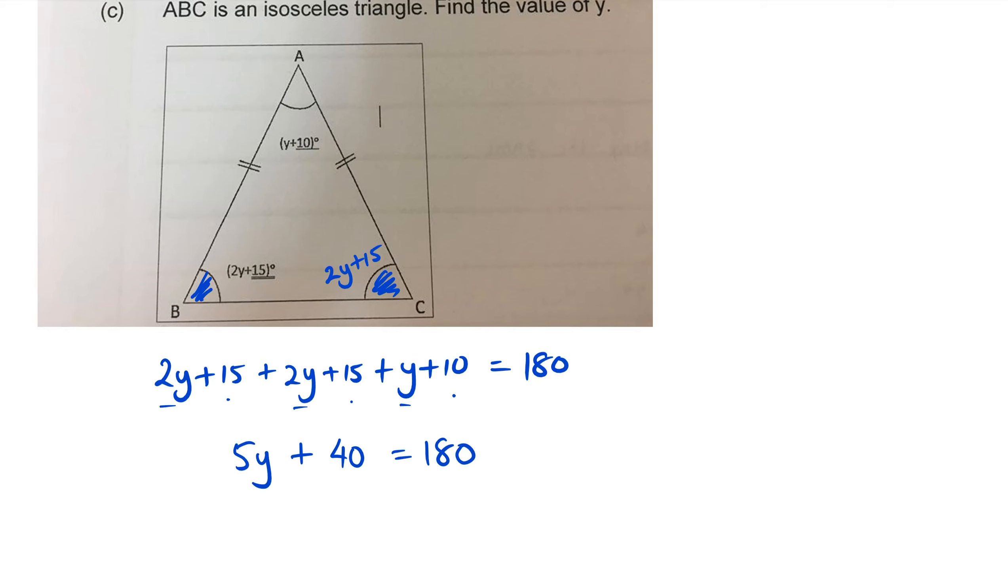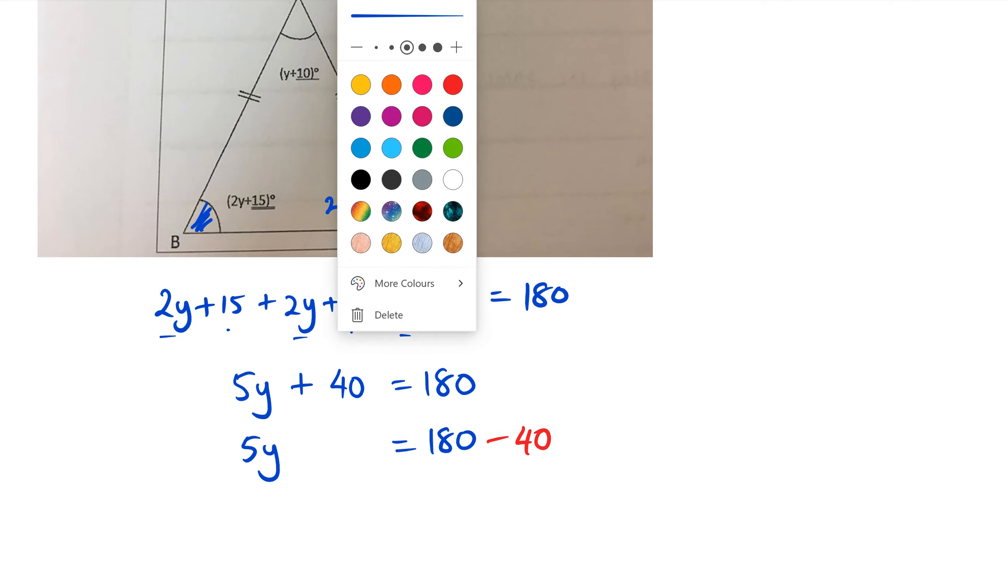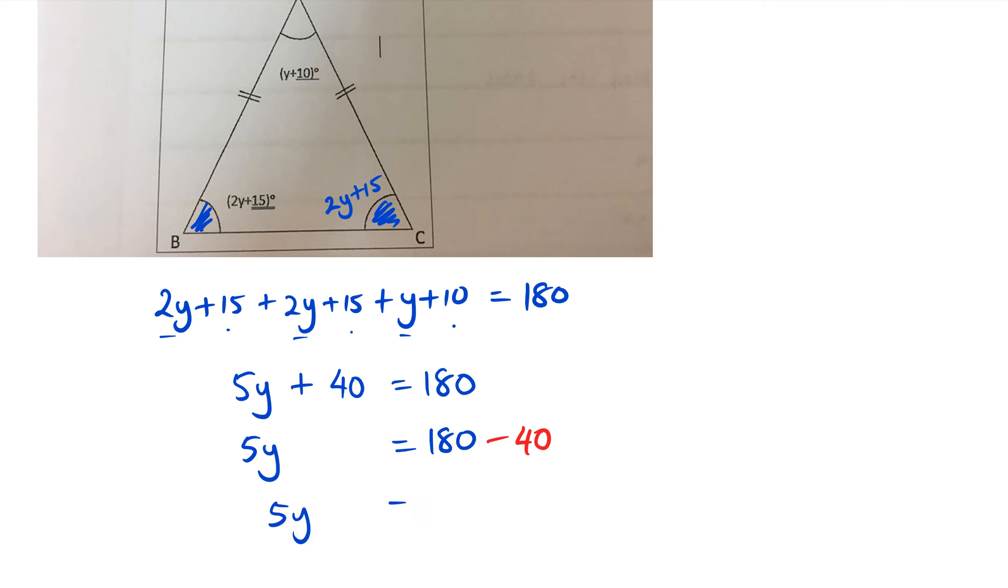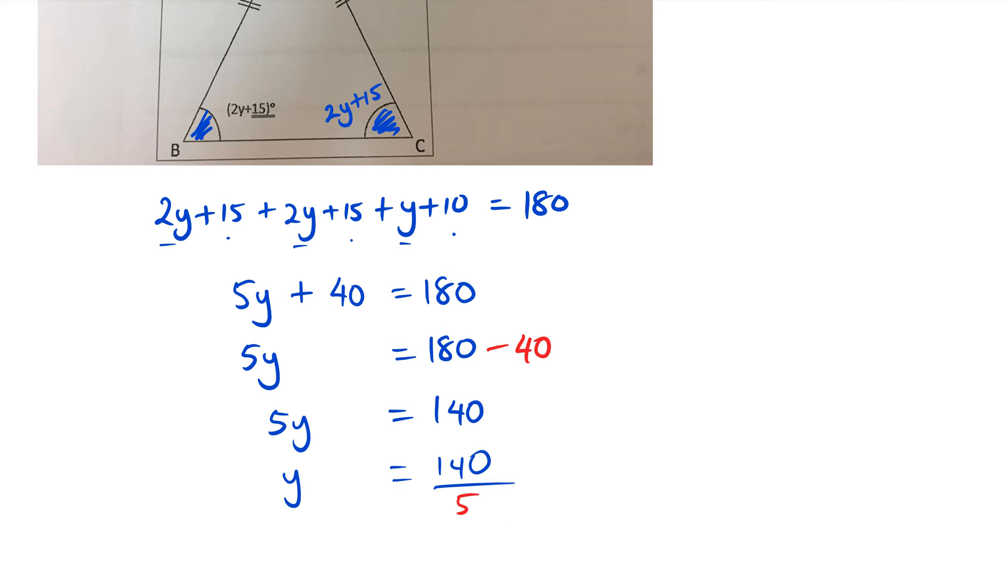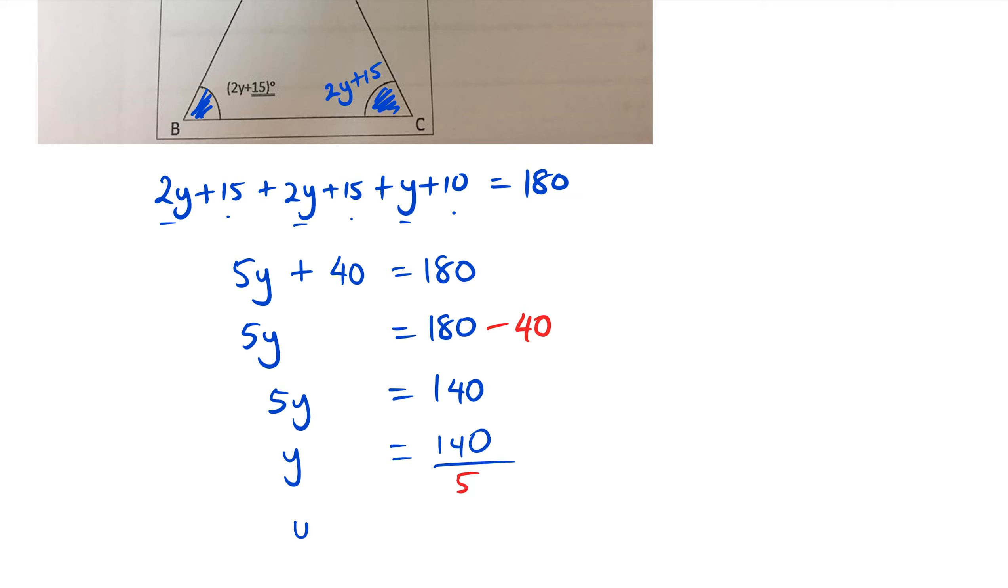So we can rearrange this now. We're going to get 5y equals 180 take away 40, and 5y equals 140, and then y is equal to 140 divided by 5. So in this case we can actually say that y is equal to 28 degrees.